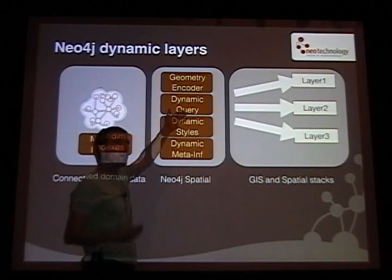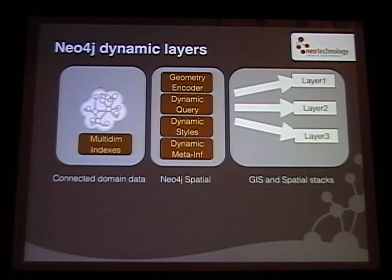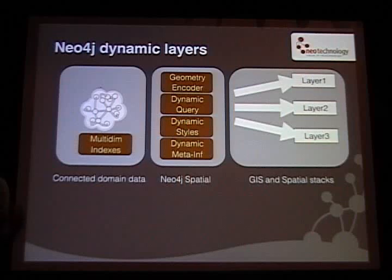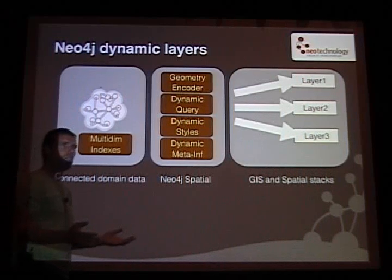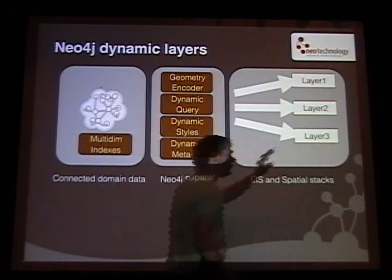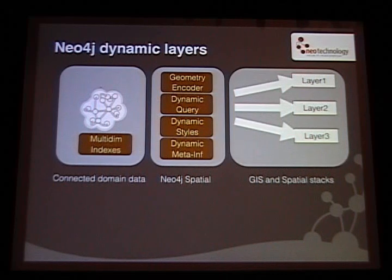How do I encode what I'm actually interested in? Dynamic styles — we've added support for GeoServer's SLDs, so you can define a layer and also define how it's going to be styled, not just out in the GIS stacks. And dynamic meta-info like the coordinate system, whether that's WGS84 or whatever, and other things like geometry types.